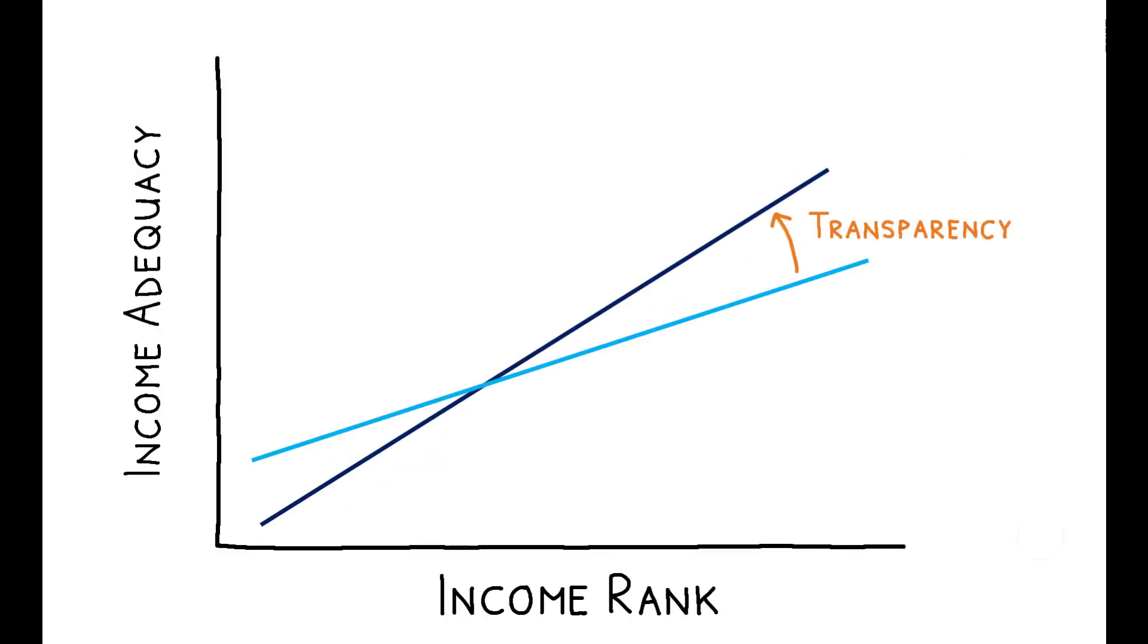In line with this, transparency also increased the gradient between income adequacy and income rank. The rich became more likely to view their income as adequate, and the poor became less likely to do so.